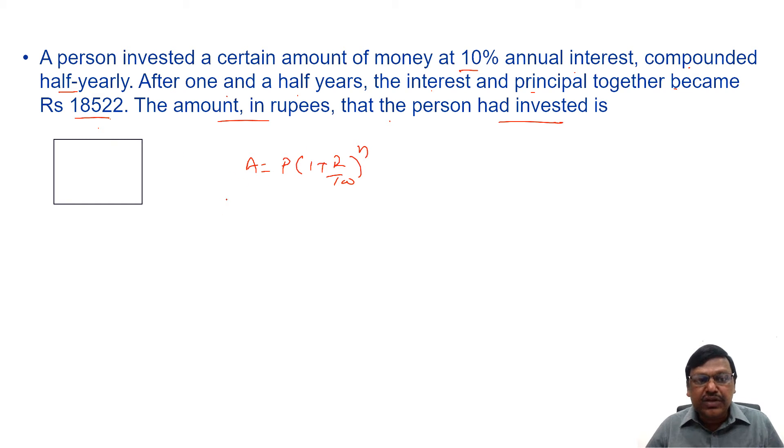Here A is 18,522, and the initial sum we have to find out.